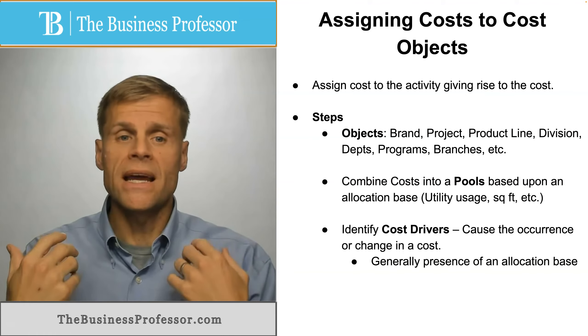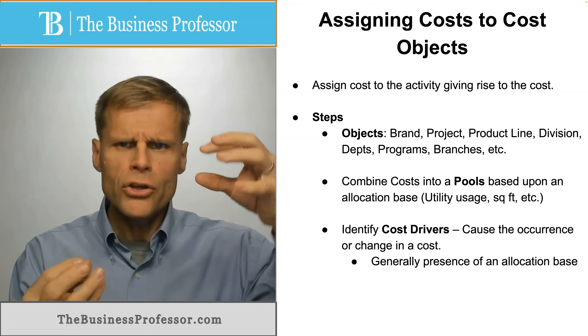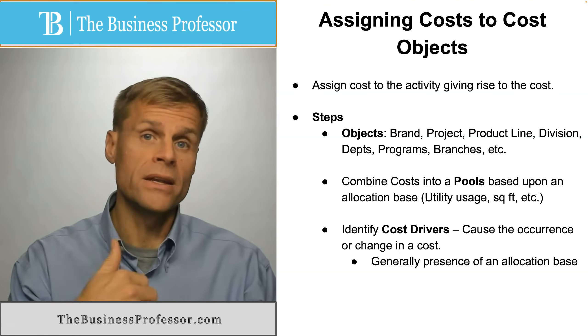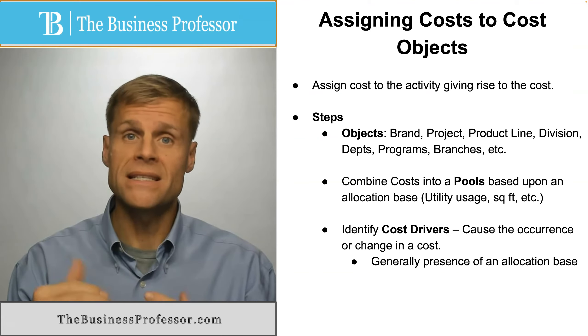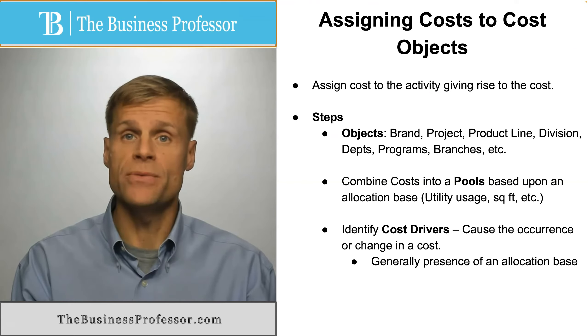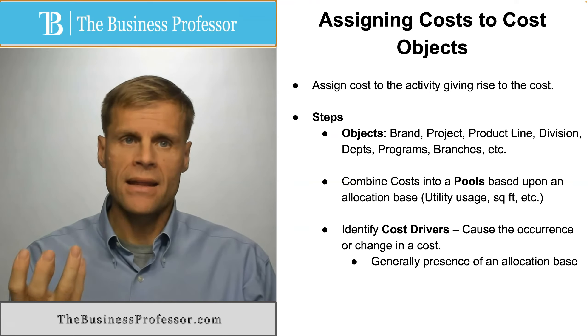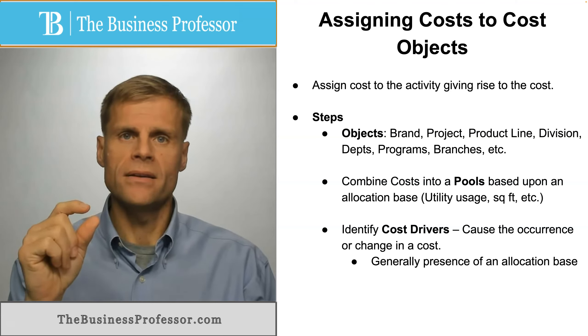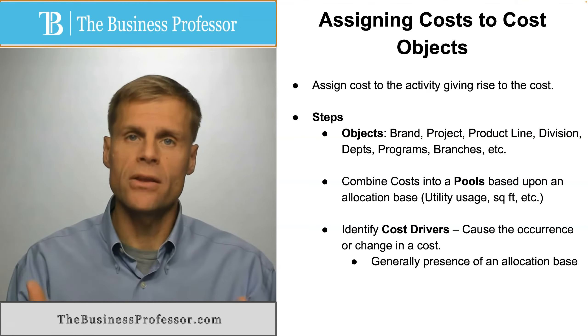Okay, then to get a unit figure you divide that total cost pool by the number of elements in that allocation base. All right, and that would give you a per unit basis to be able to assign those costs.